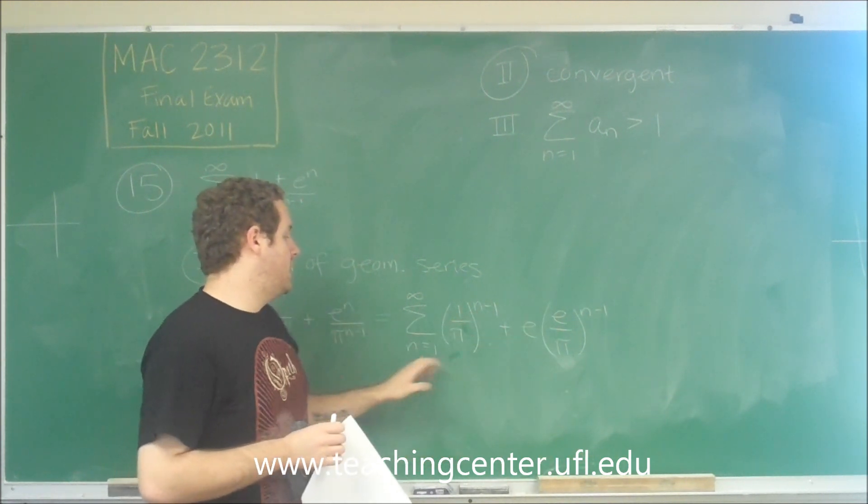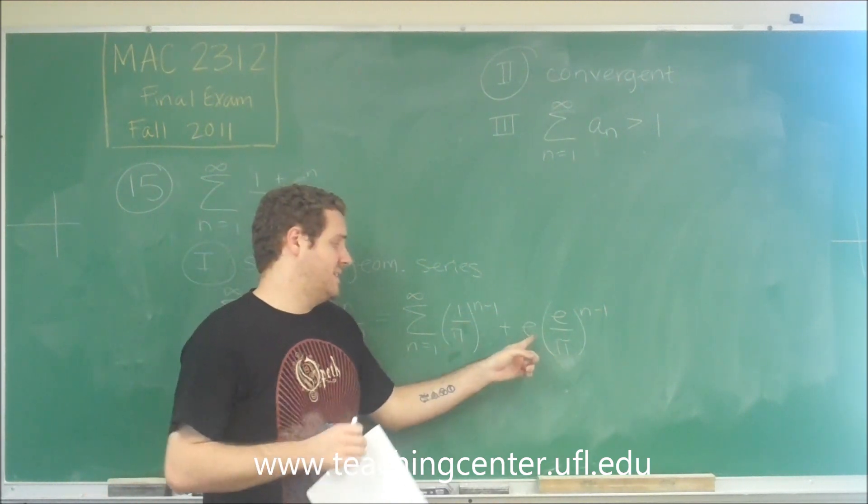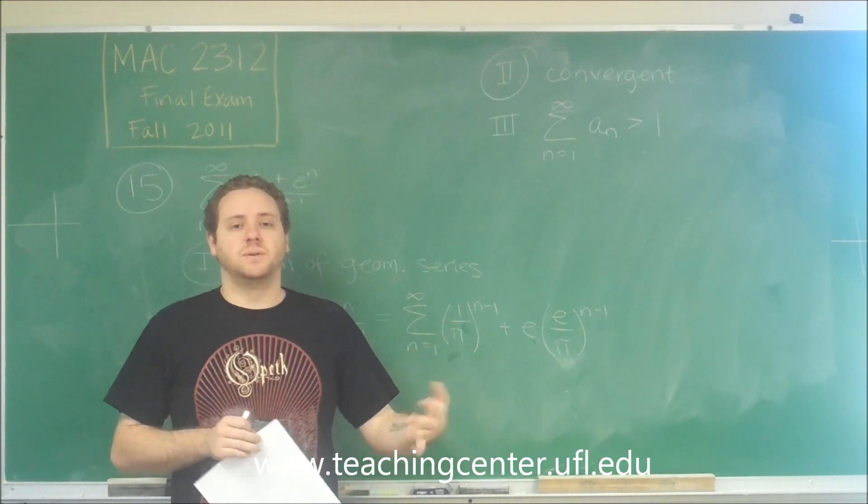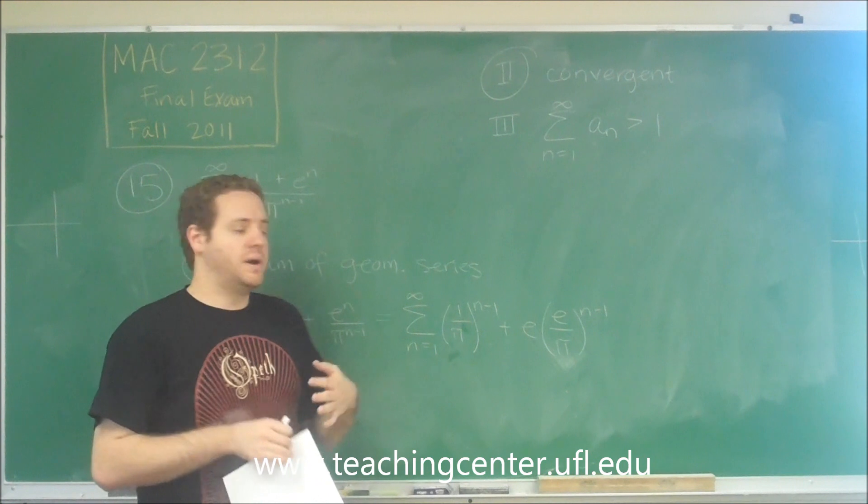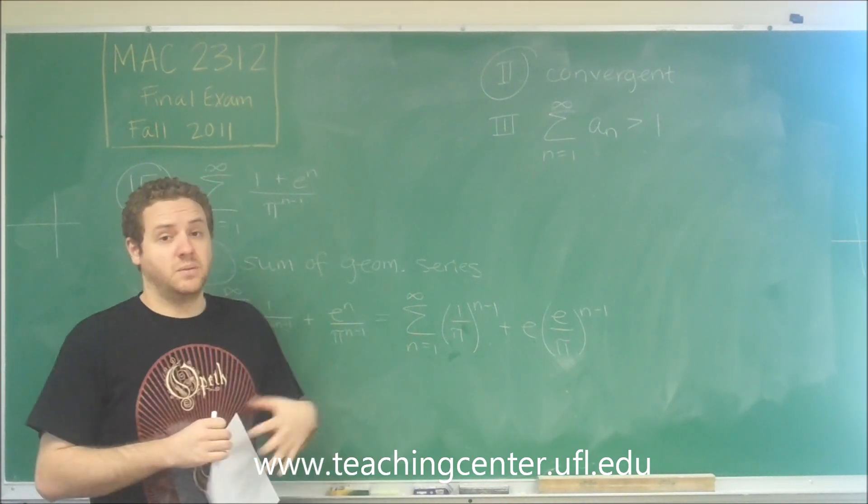The first term of each, when n equals 1, you get to the 0 power, that's 1. And in this case it's even higher, it's e. But then after that you're just adding more positive numbers to it. Now they are getting smaller, but if you started at 1 and you're adding more positive numbers, clearly the sum is greater than 1.